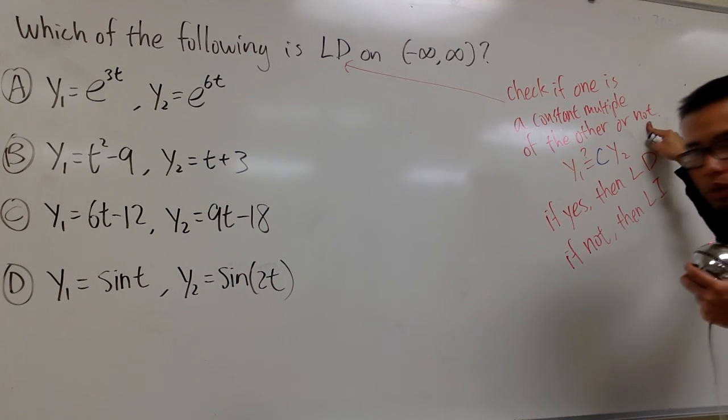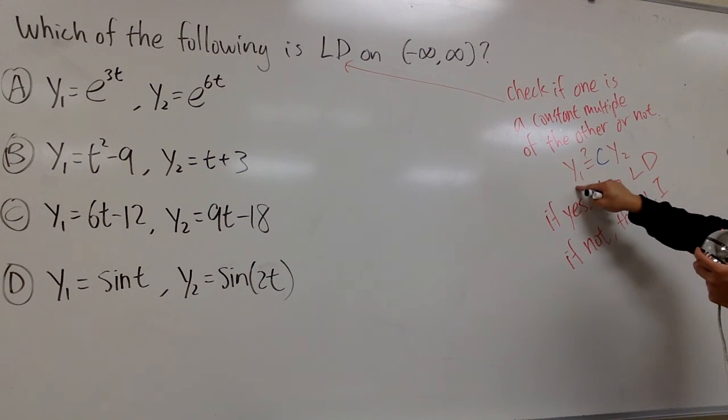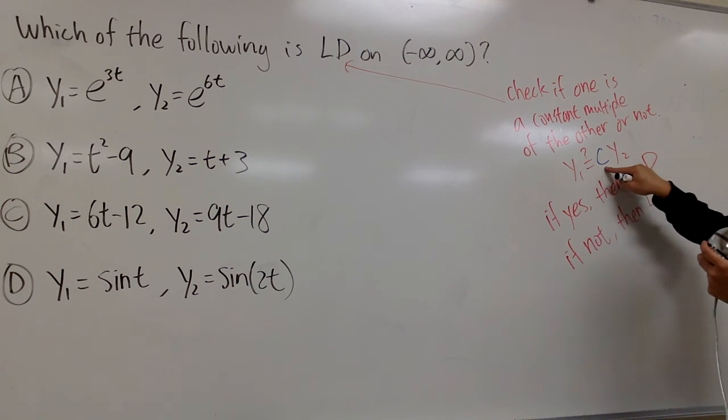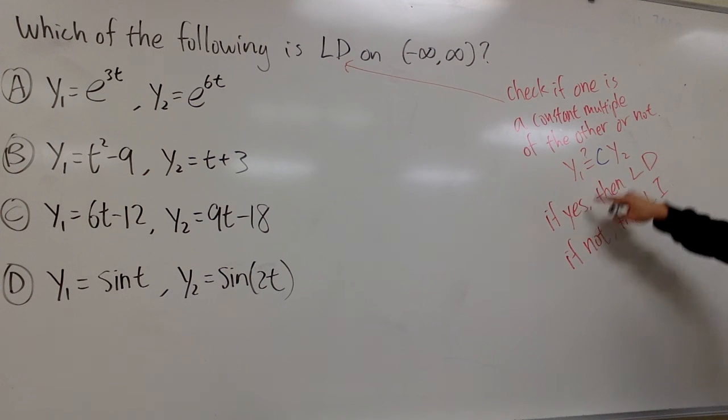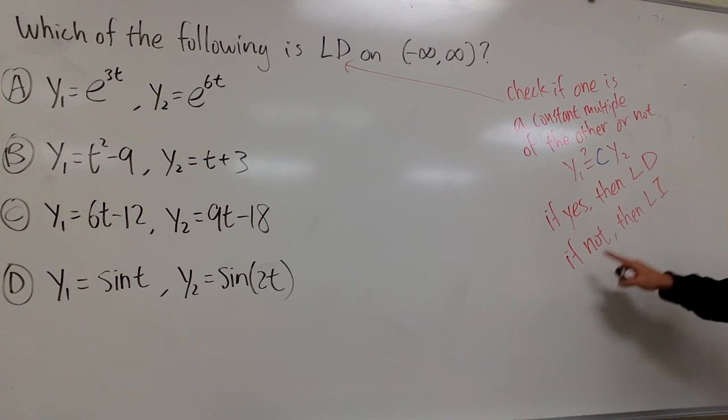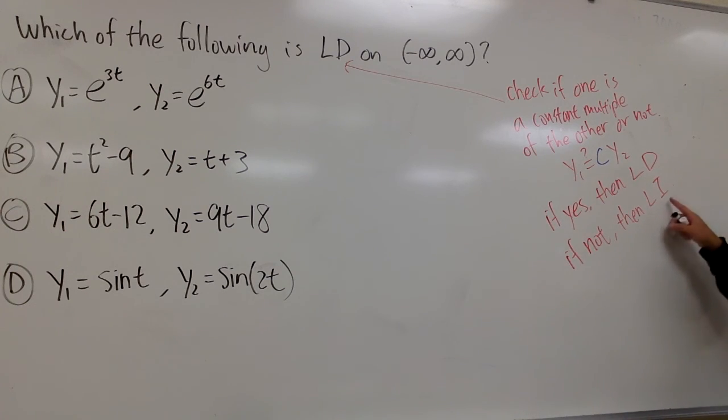In another word, we can write it down like this. Can we write the first function to be c, which is a constant multiple of the second function? If yes, then these two functions will be linearly dependent. If not, then they are linearly independent.